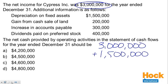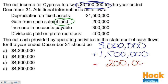The second item is the gain from the cash sale of land. The sale of land is an investing activity, not an operating activity. The cash received from the sale of the land should be shown in the investing section as a cash inflow. But this $200,000 gain is included in our $3 million of net income and it shouldn't be — it's not a cash inflow from operating activities. So we need to subtract that $200,000 gain.